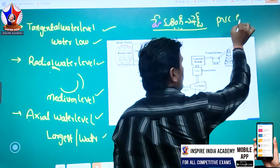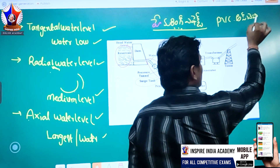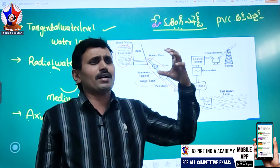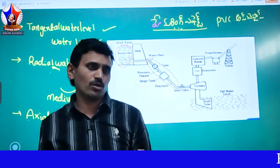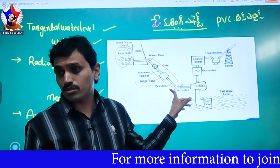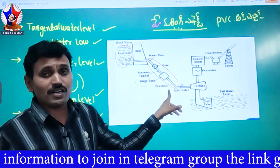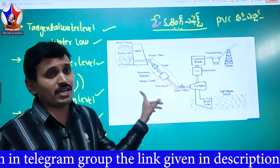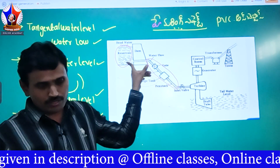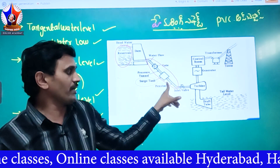Asbestos pipe and PVC pipe are used. The water hammering effect occurs on the penstock connected to the reservoir. When the surge tank and reservoir are involved, we work with the penstock.